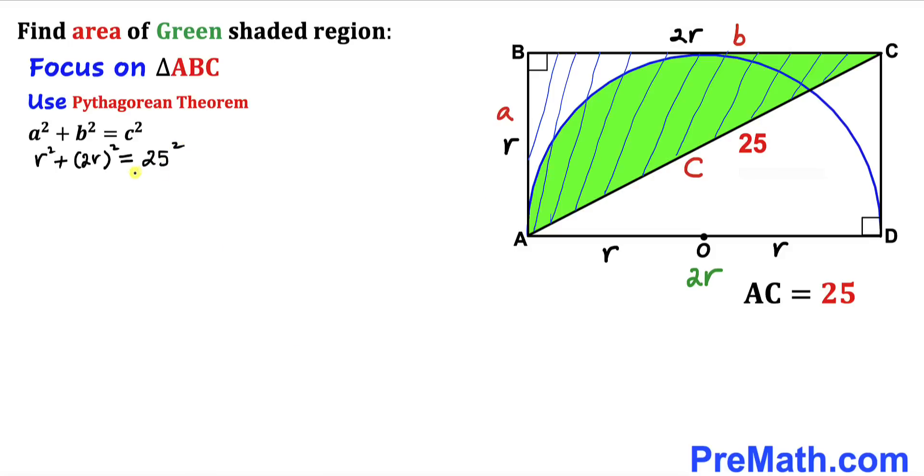And now we are going to solve for this radius R. So we got over here R². And this is going to become 4R². 25 squared is 625.